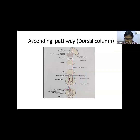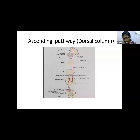For the dorsal column: mechanoreceptors in the skin — including Merkel's cells, Meissner's corpuscles, Ruffini endings, and Pacinian corpuscles — are stimulated by proprioception and vibration via two tracts: the tract of Goll and the tract of Burdach. The tract of Goll starts at the caudal end of the spinal cord and carries proprioception and vibration from the lower limb. The tract of Burdach starts in the mid-thoracic area and carries upper limb proprioception and vibration sensations.